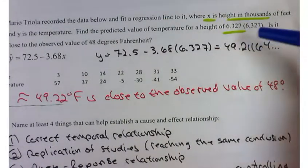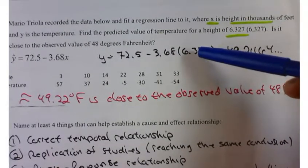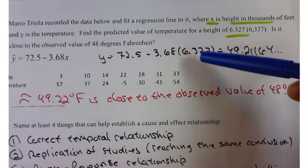I think if you put in X equals 6,327, you would find that the temperature is really, really, really cold. In fact, colder than absolute zero.